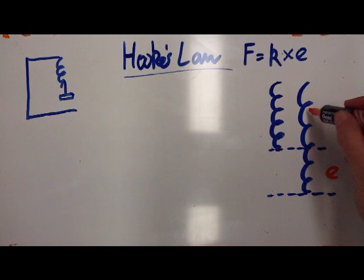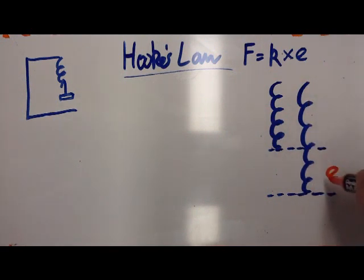The extension is how far past its original length it goes. So if this is 10 and this is 10, whatever is here, let's say if this is total 15, the extension would be 5 right here.